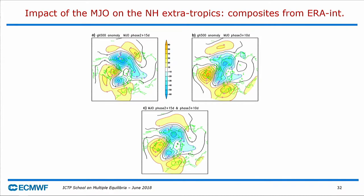Let's move to a different time scale — the sub-seasonal MJO timescale. You can look at the frequency of Atlantic regimes, or you can do a simpler thing: make a composite of the geopotential height flow, for example 15 days after the MJO is in phase 2 or 10 days after the MJO is in phase 3. Phase 3 usually comes 5 to 7 days after phase 2, so roughly it should give the same results in the extratropics, and in fact it does. You can combine this to have the overall effect of convection over the Indian Ocean during the MJO, and again you get this wave number 2 with the same sign over the North Atlantic and the North Pacific.